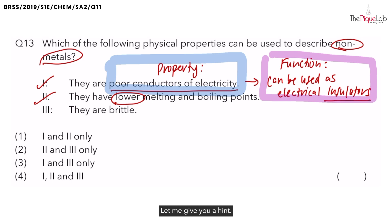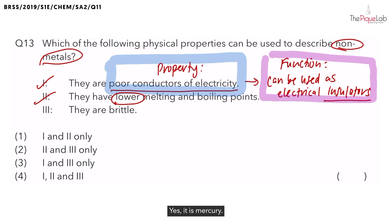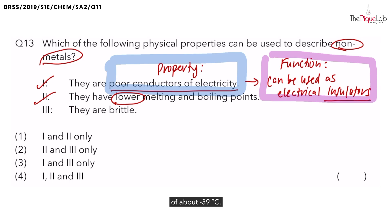What is the only metal that exists as a liquid at room temperature? Let me give you a hint — you can find this liquid in some thermometers. Yes, it is mercury. Mercury has a melting point of about minus 39 degrees Celsius.